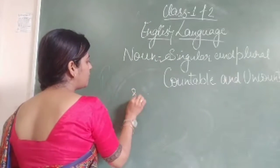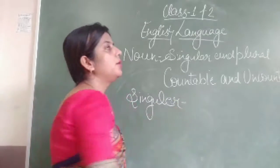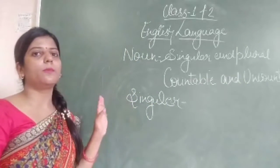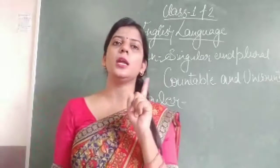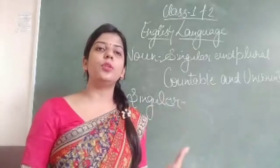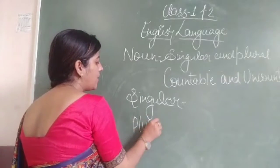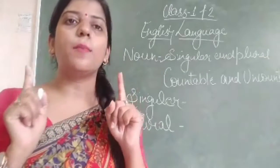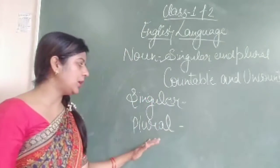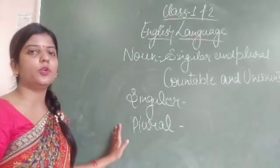First of all, we are talking about singular and plural. Singular means the thing which is one — it is considered in a single form. Always keep in mind: if you are talking about one, then it comes under singular, and if you are talking about more than one, then it comes under plural.